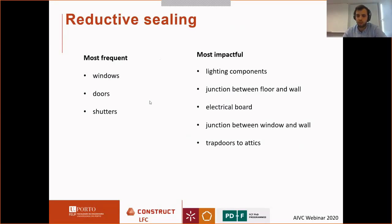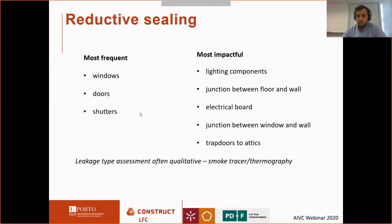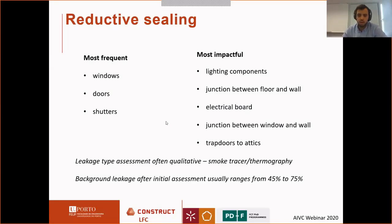From several publications, the most frequent leakage paths are windows, doors, and shutters, but these are not the most impactful. The most impactful range from lighting components, junctions between floors, electrical boards, and some trapdoors to attics. Normally this leakage assessment is qualitative — either by thermal imaging or smoke — and not quite quantitative. Studies that provide quantitative assessments show that the background leakage after initial assessment ranges from 45 to 75 percent.